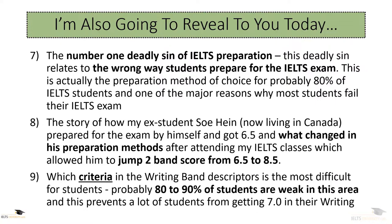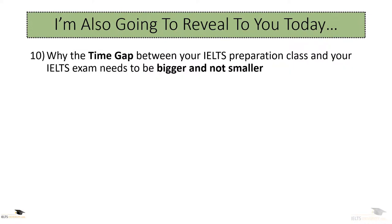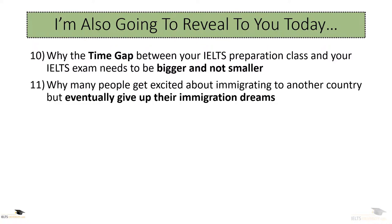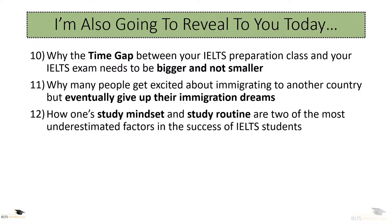Number nine: which criteria in the writing band descriptors is the most difficult for students. Probably 80 to 90% of students are weak in this area, and this prevents a lot of students from getting 7.0 in their writing. Number ten: why the time gap between your IELTS preparation class and your IELTS exam needs to be bigger and not smaller. Number eleven: why many people get excited about immigrating to another country but eventually give up their immigration dreams. And number twelve: how one's study mindset and study routine are two of the most underestimated factors in the success of IELTS students.